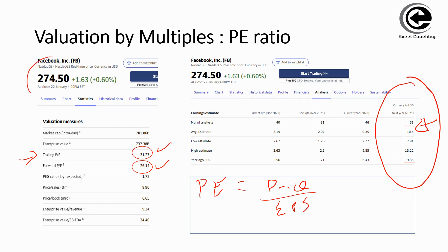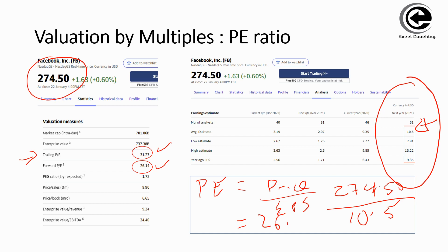The PE ratio is price divided by earnings per share. The price of Facebook, as we can see, is $274.50. You divide that by earnings per share, which we just found to be $10.50 — the average estimate. So the price-earnings ratio is $274.50 divided by $10.50, which gives us 26.14. That is the forward PE ratio listed on Yahoo Finance. We have just proved that the PE ratio formula — price divided by earnings per share — works using the available data.